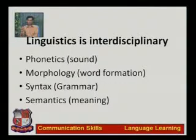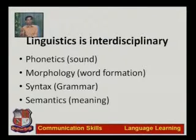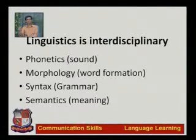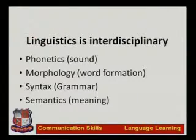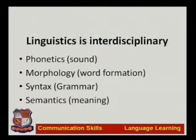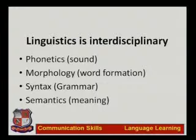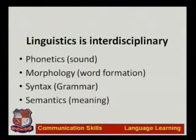The last branch is semantics, which is the science of meaning. People are still doing research on grammar and meaning — whether the meaning is in the mind of the speaker or the listener, or whether the original meaning resides in the word itself. These are the branches of linguistics, and this is how language is a science.